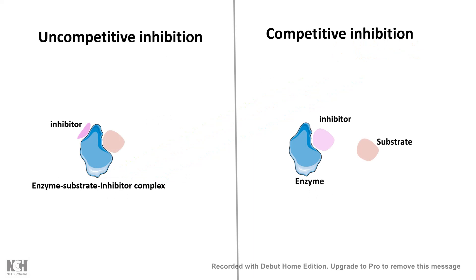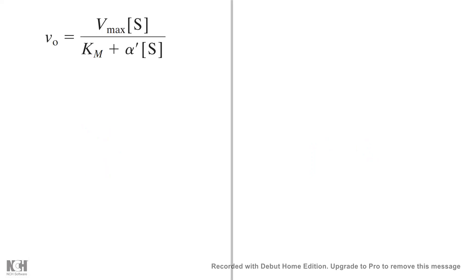In case of uncompetitive inhibition, the inhibitor binds to a region other than the active site — unlike competitive inhibition, where the inhibitor and substrate compete for the active site. In uncompetitive inhibition, the inhibitor binds to a site other than the active site and leads to a conformational change in the enzyme, such that the enzyme-substrate complex cannot get converted to product.